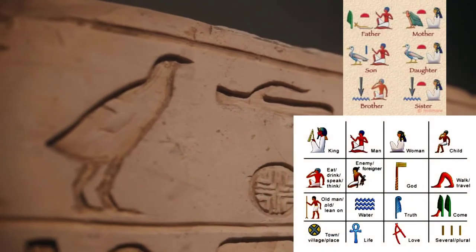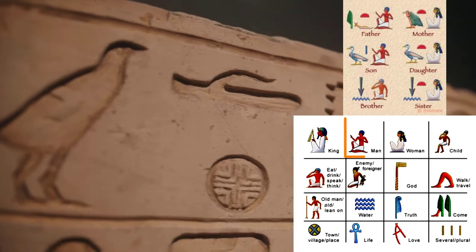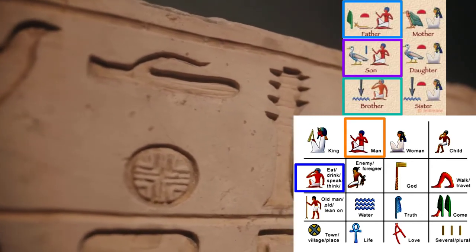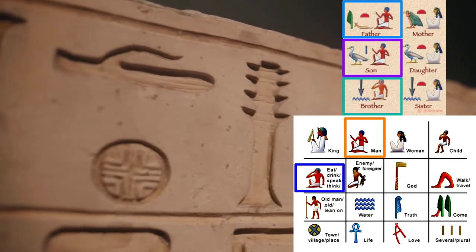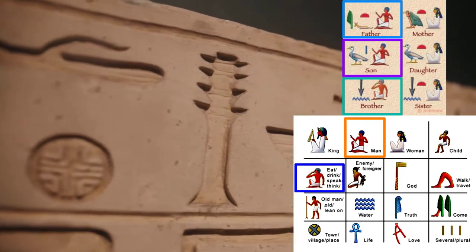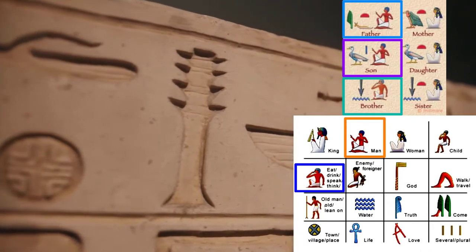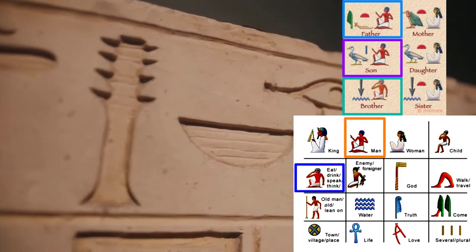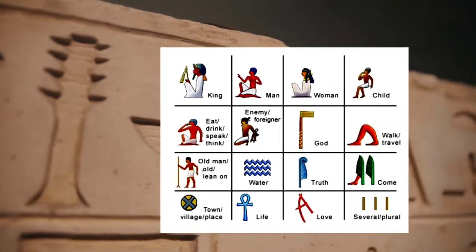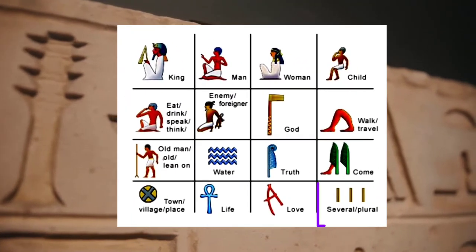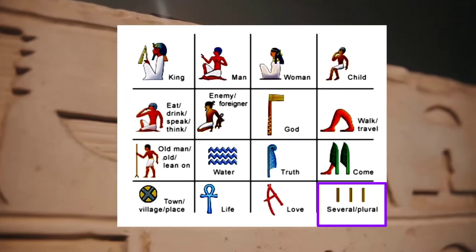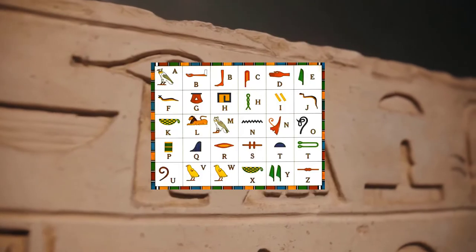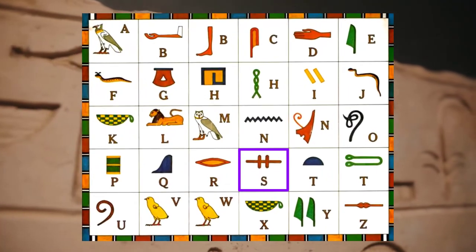Determinatives were used to distinguish between these types of words. One type of determinative was the symbol of a man — see the picture to the right — which gives the masculine meaning to the word 'father.' Sometimes two or more symbols together had a specific meaning, like three lines in a row, which meant that the word was plural, sort of like adding an S to the word.